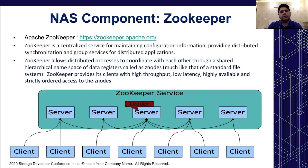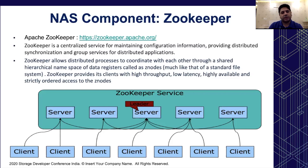Apache Zookeeper is a centralized service for maintaining configuration information, providing distributed synchronization and group services for distributed applications. Zookeeper allows distributed processes to coordinate through a shared hierarchical namespace of data nodes called Z-nodes, much like a standard file system. Zookeeper provides clients with high throughput, low latency, highly available, and strictly ordered access to Z-nodes. Its basic architecture comprises server nodes where one server is elected as leader and the rest act as followers; clients can talk to any server and data consistency is guaranteed.